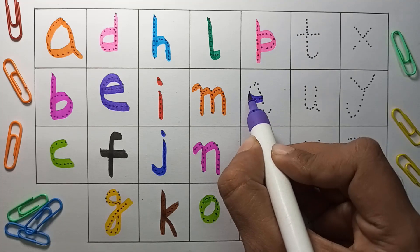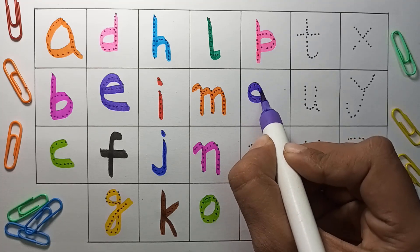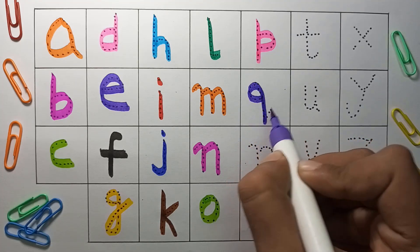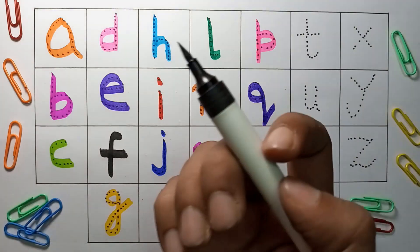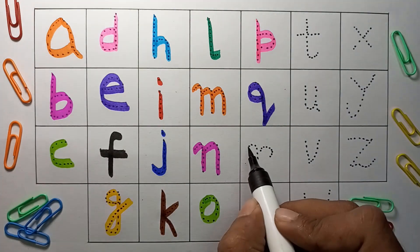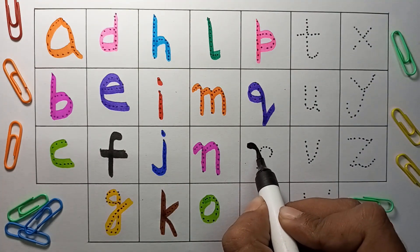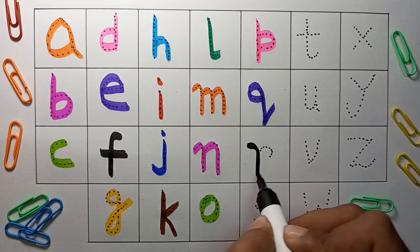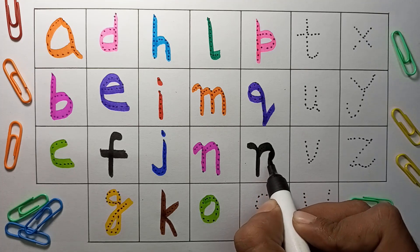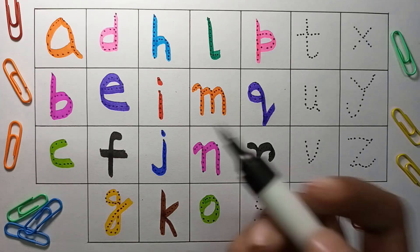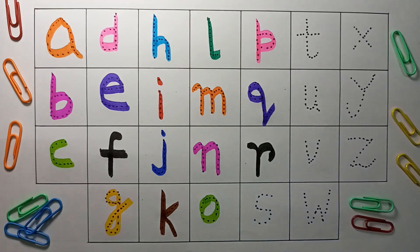Q, Q for quill, black color. R, R for rabbit, yellow color.